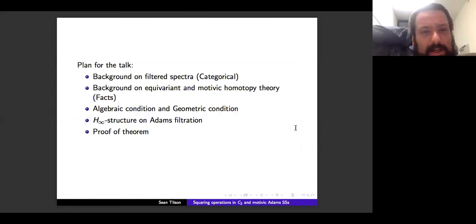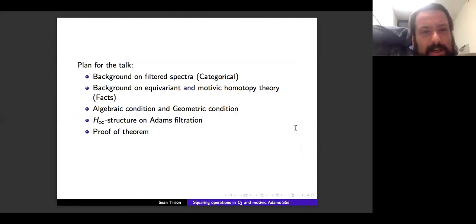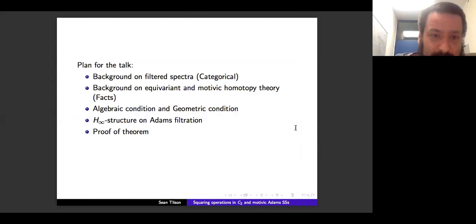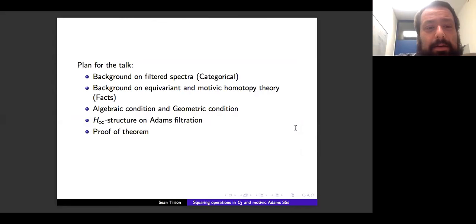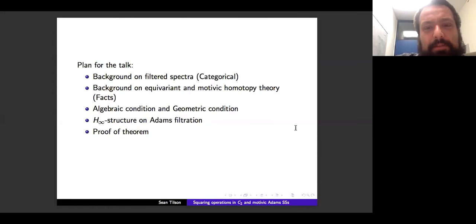The plan for the talk: first talk about filtered spectra, which is pretty categorical. Then background on equivariant and motivic homotopy theory — brief, mostly a list of facts we need. Then the algebraic and geometric conditions. Then the H-infinity structure on the Adams filtration. Then we prove the theorem. And hopefully if we have time, we'll talk about some examples.